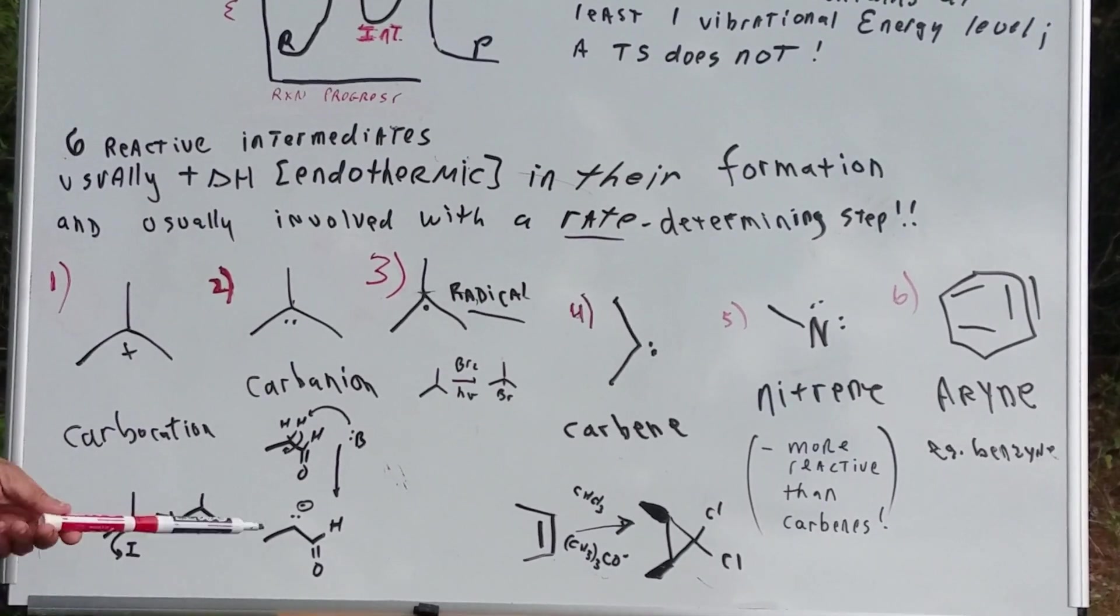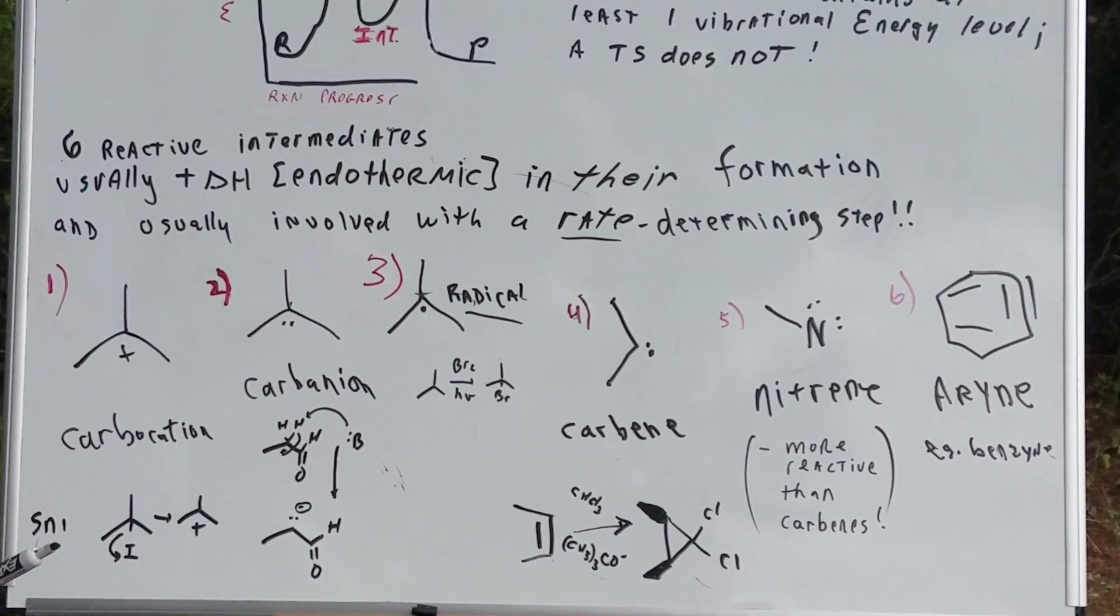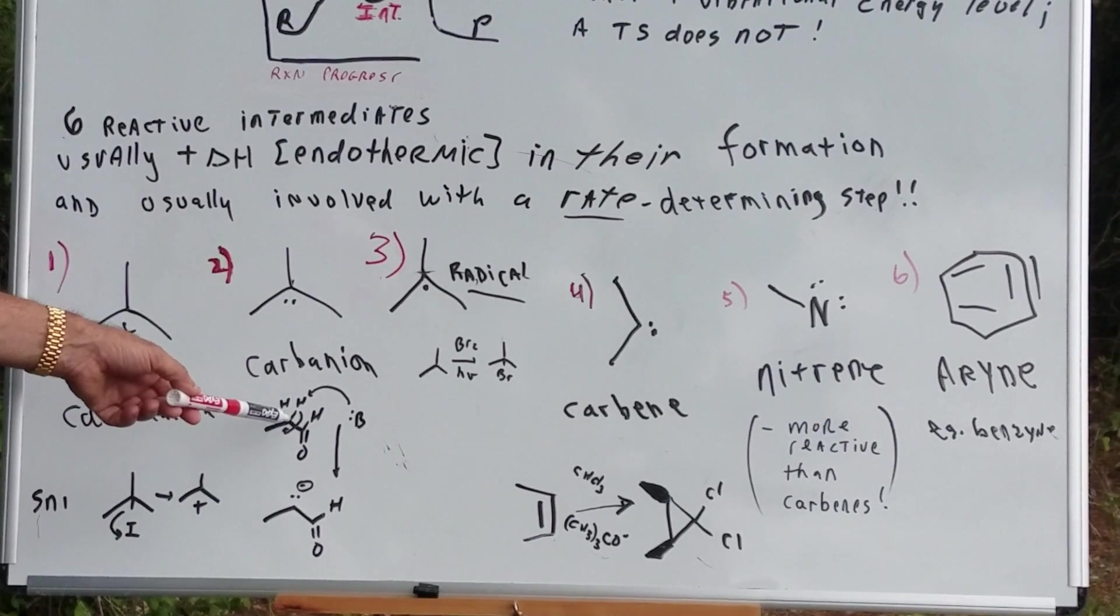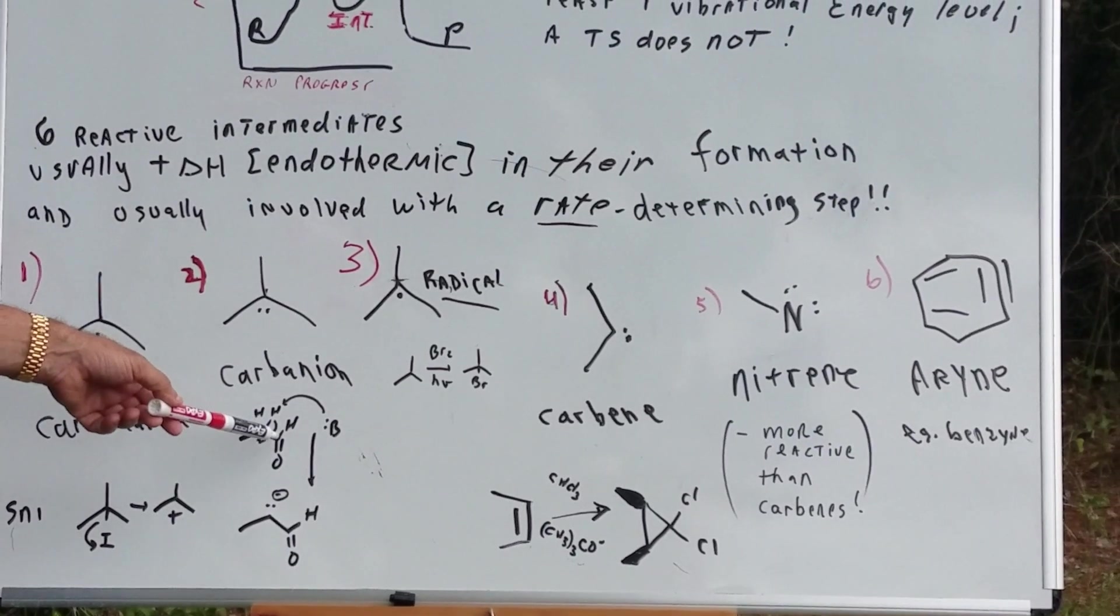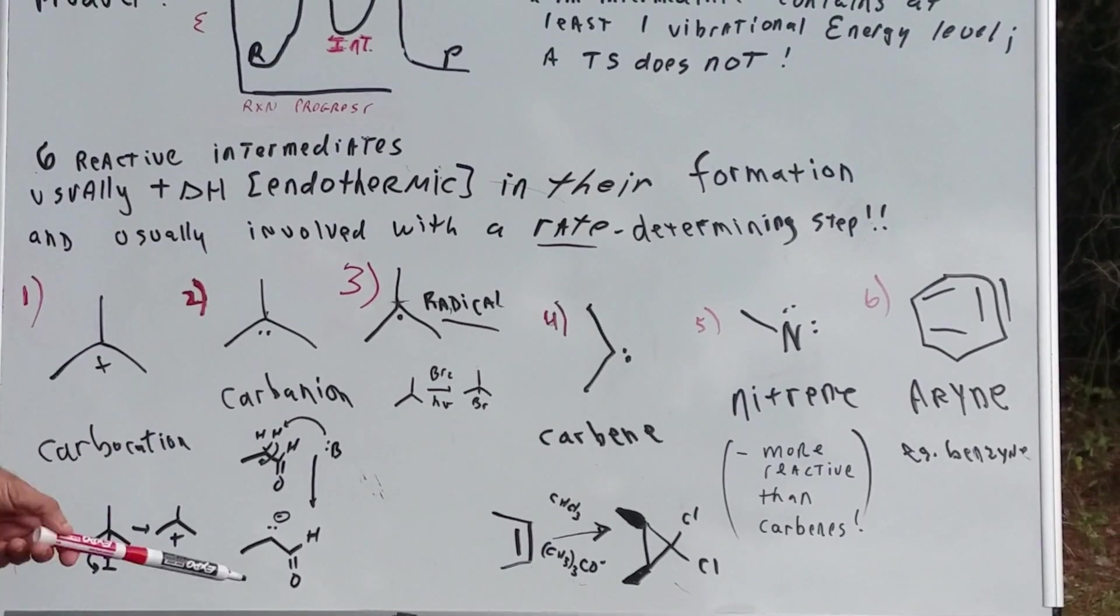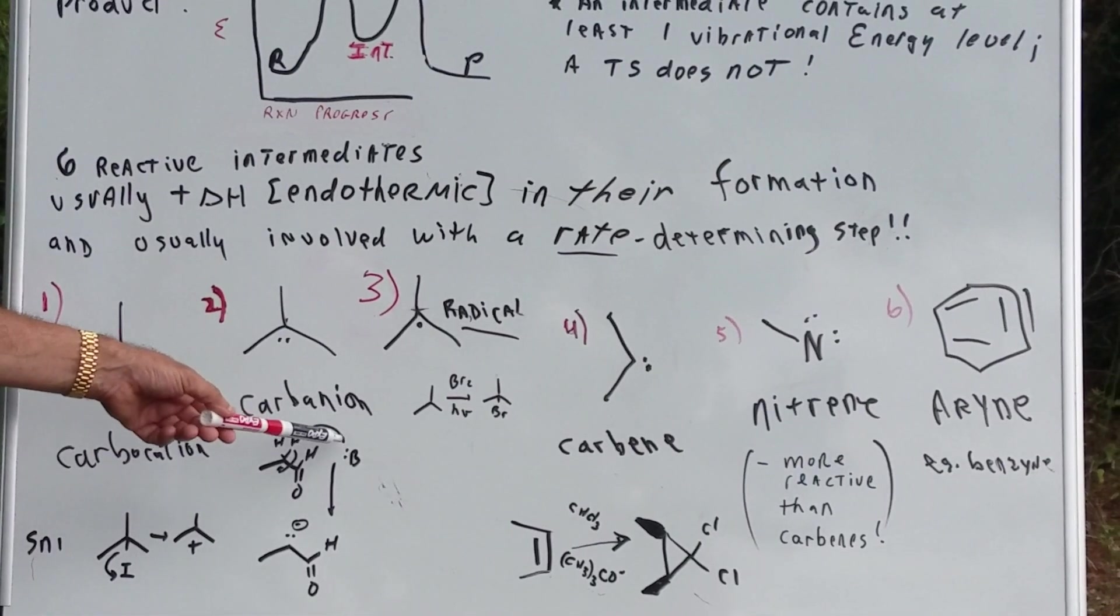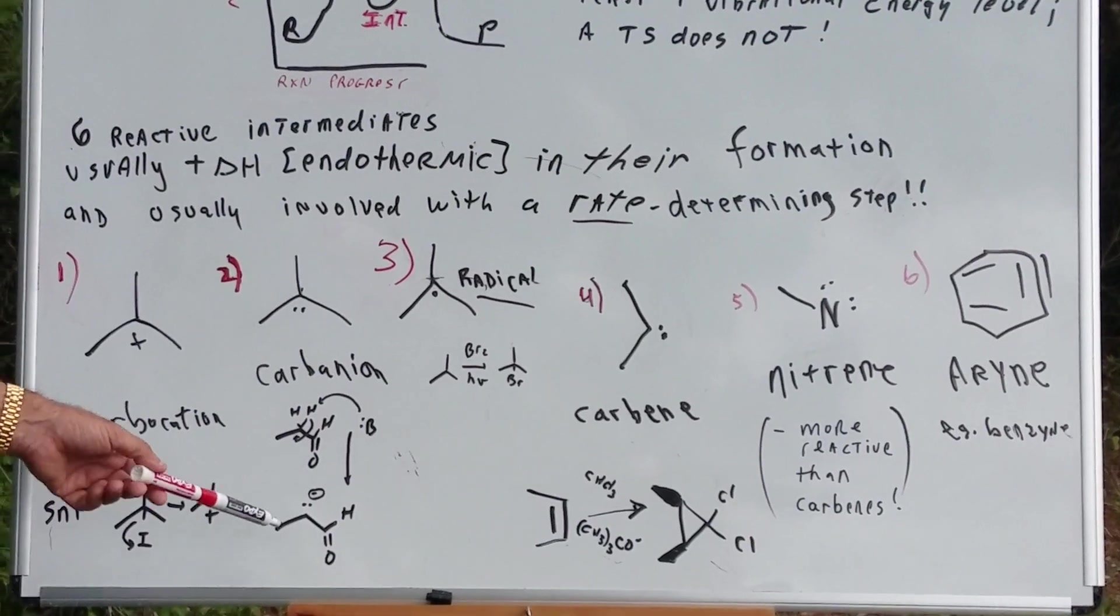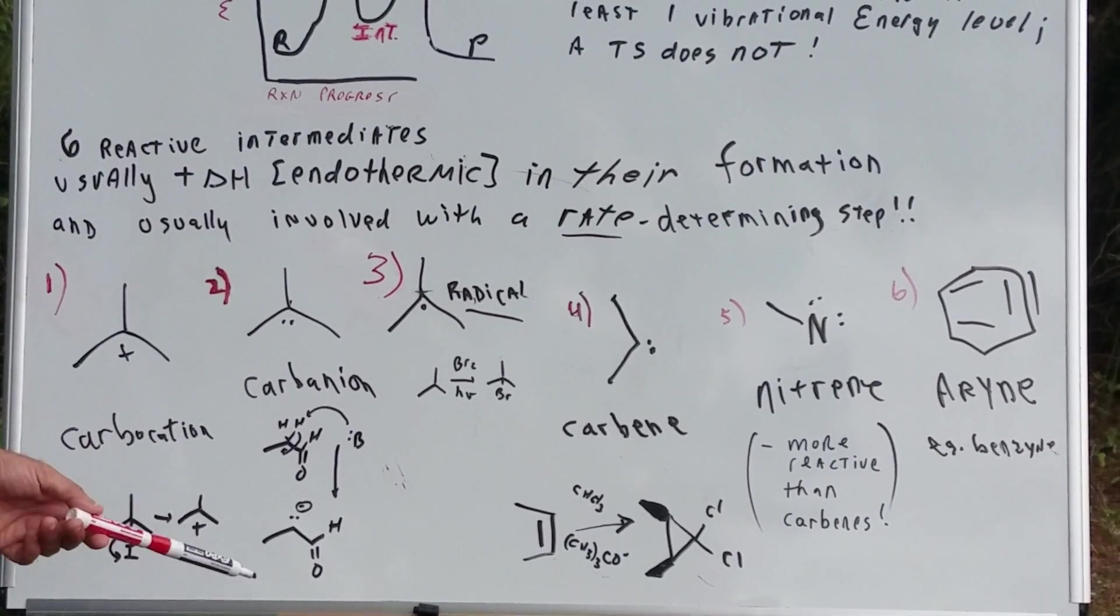This one, you should recognize, this is a carbanion. Notice, if, say, for example, you had a carbon adjacent to a carbonyl group, those hydrogens, the alpha hydrogens, are acidic. A base can come in and you can generate a carbanion. You might know this as an enolate.